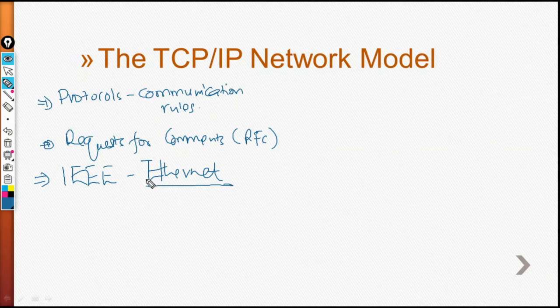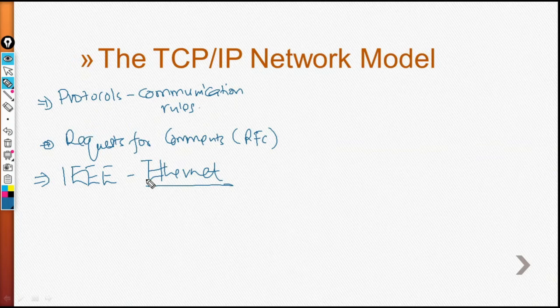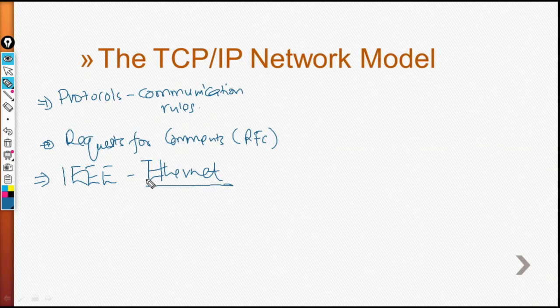The TCP/IP model creates a set of rules that allows us to take a computer or mobile device out of the box, plug in all the right cables, turn it on, connect it to the network, use a browser, and have it work as expected. This means the operating system in that device implements parts of the TCP/IP model, and the Ethernet card or wireless LAN card also implements some local area network standard referenced by the TCP/IP model. In short, vendors that create hardware and software refer to the TCP/IP model to make sure their devices can be used in networks.